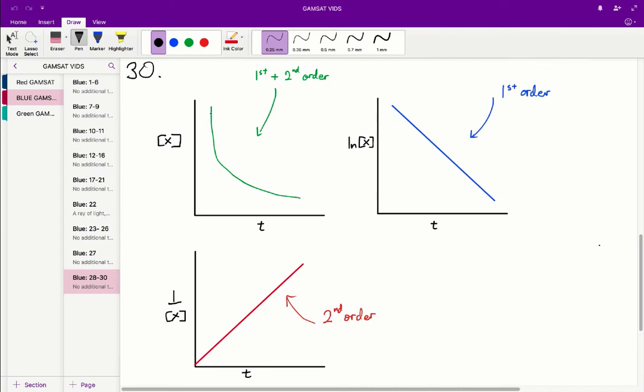And what it's describing is we've got some sort of reactant X and it's been converted into another product. And over time, that X, since it's been converted, the concentration of X is going to go down.